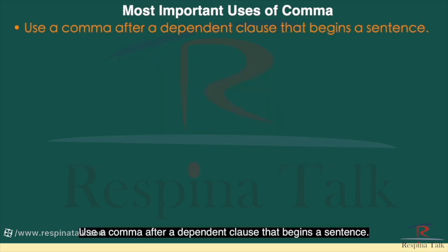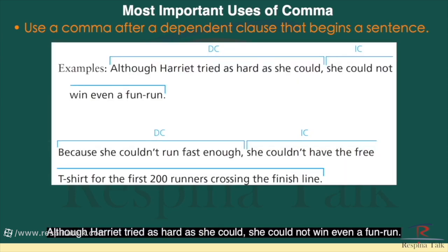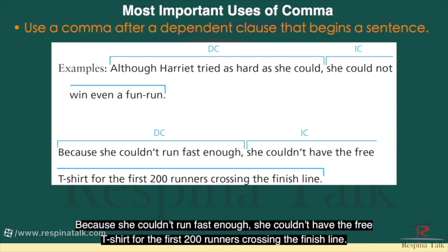Use a comma after a dependent clause that begins a sentence. For example: 'Although Harriet tried as hard as she could, she could not win even a fun run.' Or: 'Because she couldn't run fast enough, she couldn't have the free t-shirt for the first 200 runners crossing the finish line.'